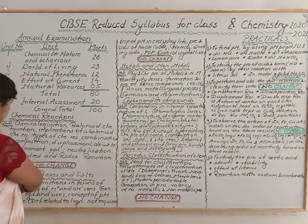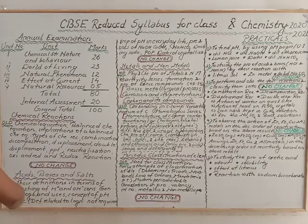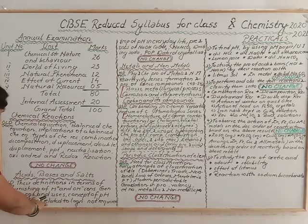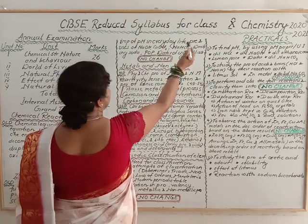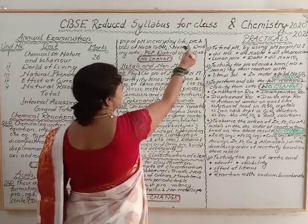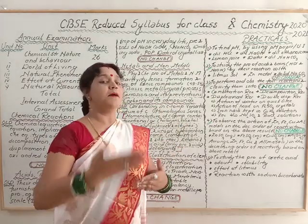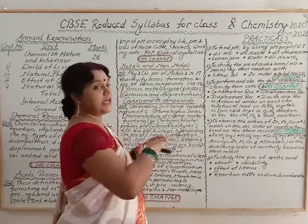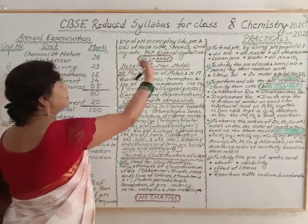Second chapter is Acids, Bases and Salts. The syllabus includes: definitions in terms of furnishing of H+ and OH- ions, general properties, examples and uses. Concept of pH — definition related to logarithm is not required. Importance of pH in everyday life, preparation and uses of — sodium hydroxide, bleaching powder, sodium hydrogen carbonate, baking powder, baking soda, washing soda, plaster of Paris, and water of crystallization. There is no change in this chapter; nothing has been deleted or omitted.